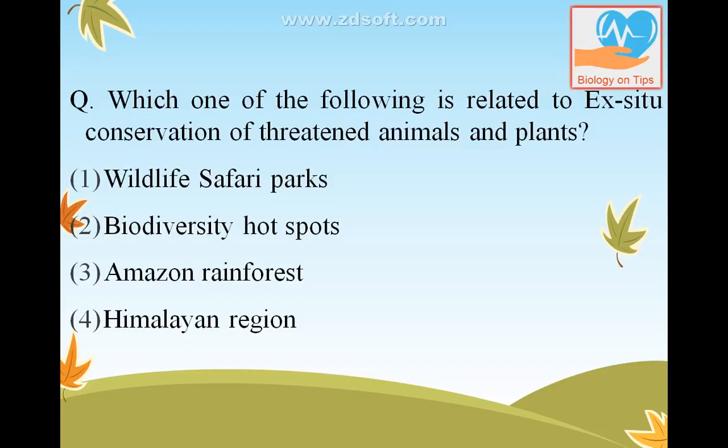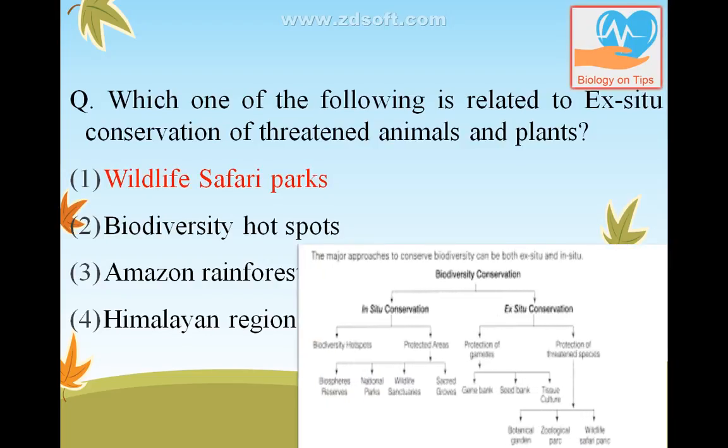Which one of the following is related to ex-situ conservation of threatened animals and plants? The answer is wildlife safari parks. Ex-situ conservation is an off-site strategy for conservation of animals and plants in zoological parks and botanical gardens respectively. You can see the flow chart.